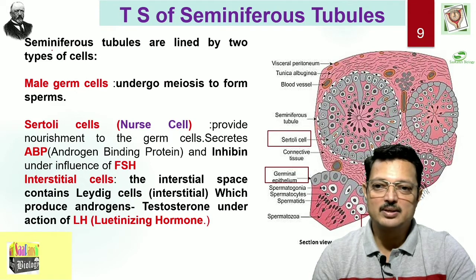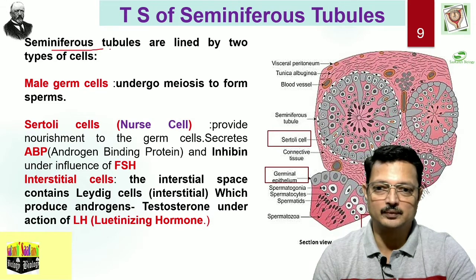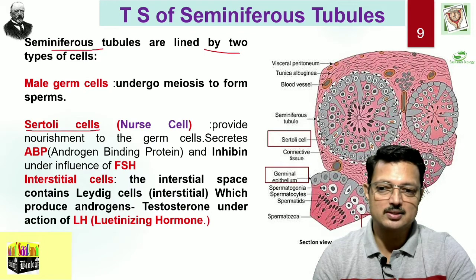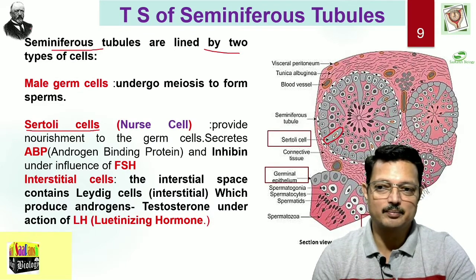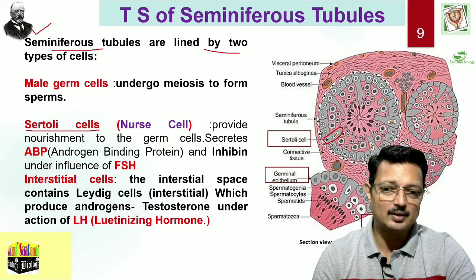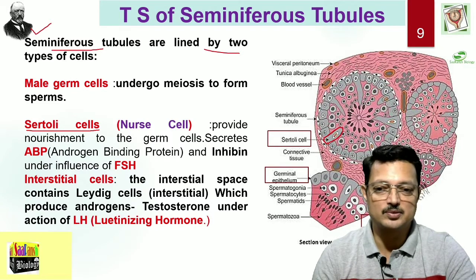When seminiferous tubules are sectioned, you can see the structures responsible for sperm production. The tubules are lined by two types of cells. One type is the bigger pyramidal cells called Sertoli cells — also called nurse cells. Named after the Italian histologist Enrico Sertoli, these cells produce spermatogenic substances that help in nursing and nurturing of the sperm, providing nourishment.